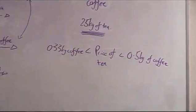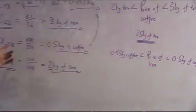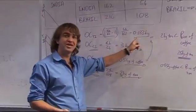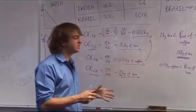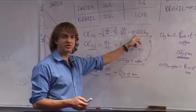Now, for India, they could produce a whole lot of tea and they could swap it for 0.333 kilograms of coffee. So if they specialize in tea production, before trade they could swap it for 0.3 kilograms of coffee.